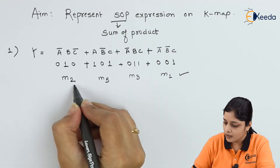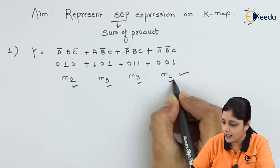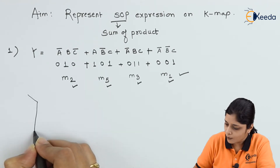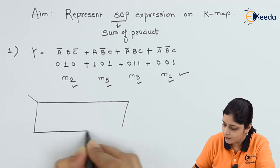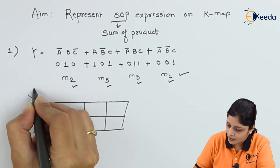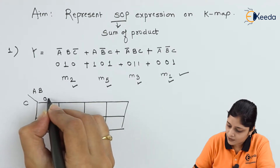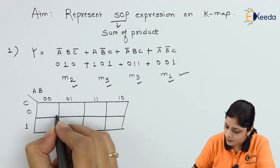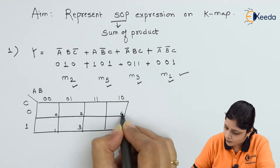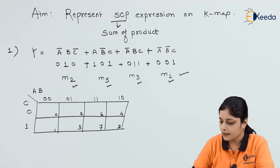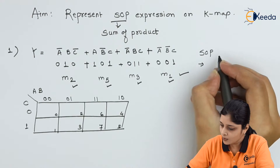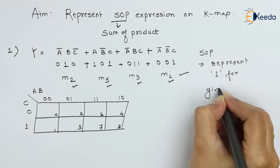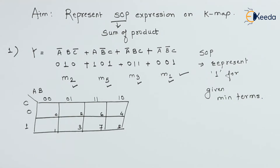We have the final minterms: m2, m5, m3, and m1. Now we'll draw the Kmap. Three variables are present: A, B, and C. Gray codes are used, so the sequence is 0,0 / 0,1 / 1,1 / 1,0. Here again 0 and 1. Label the boxes 0, 1, 2, 3, 4, 5, 6, and 7.